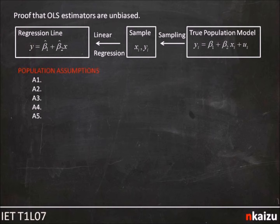Thinking about going from our true population model in the top right-hand corner, and then sampling from that population to get a sample of X_i's and Y_i's, we then do linear regression on that sample data, and we get our OLS linear regression line in the top left-hand corner, Y equals beta_1 hat plus beta_2 hat X. However, it turns out to prove OLS estimators are unbiased, we need a few assumptions to hold.